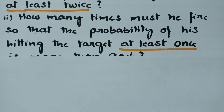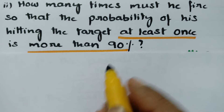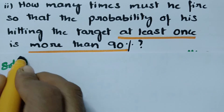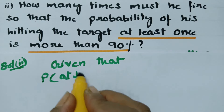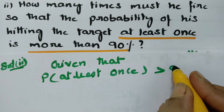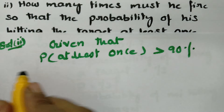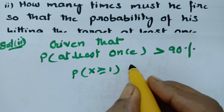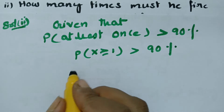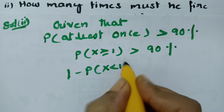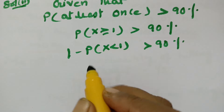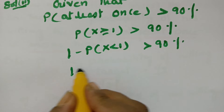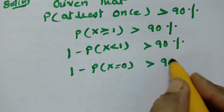The next equation: how many times must he fire so that the probability of hitting the target at least once is more than 90%? Solution 2: given that the probability of hitting the target at least once is greater than 90%. At least once means minimum once. So instead I write: 1 minus P(X < 1), which is 1 minus P(X=0), is greater than 90%.